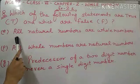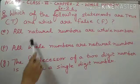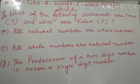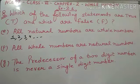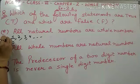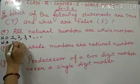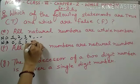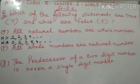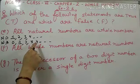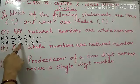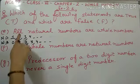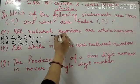Now e part: 'All natural numbers are whole numbers.' Bachoh, natural numbers jo hai woh shurru hootet hai 1 se, aur whole numbers shurru hootet hai zero se. Yeh natural numbers hai, aur yeh whole numbers hai. All natural numbers whole numbers bhi hootet hai. Toh that means yeh statement true hai. Natural numbers 1 se start ho raha hai, aur whole numbers mein bhi 1, 2, 3, 4 aata hai. So this statement is true.